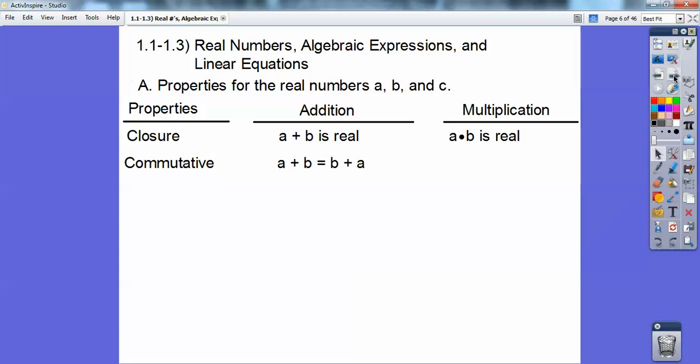The commutative property. Actually, this one's used a lot. When I drive to work, I commute to work and then I commute back home. These guys are commuting around the addition sign. So a plus b is the same as b plus a. That's the commutative property of addition. The commutative property of multiplication works the same. A times b equals b times a. Can you see how a and b are commuting around that multiplication sign?